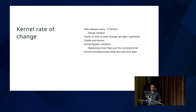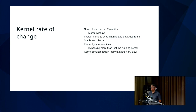People talk about kernel bypass solutions like DPDK or SPDK. I think that's sometimes a problem of the kernel having failed — if we can't accommodate the use cases people need. But often it's just that people think the kernel rate of change is too slow, and it is very slow to get things developed and into a kernel tree, so sometimes it's just easier to do your own thing.